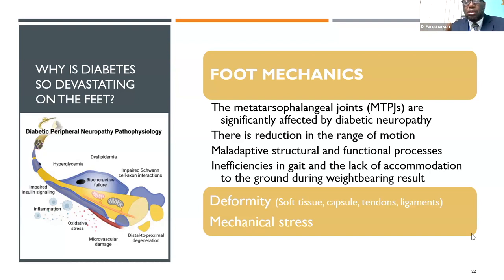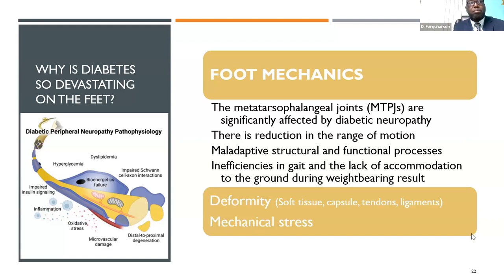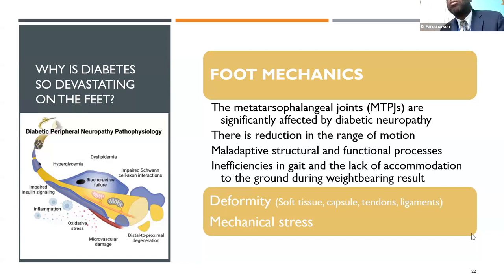Joints are significantly affected with neuropathy — there's reduction in the range of motion. When your toes are supposed to be straight, the nerves pull them into a bent position, exposing the tip of the toes to pressure. Because of neuropathy, we get maladaptive structural and functional processes that make our gait inefficient. We can't appreciate the ground beneath us, which changes the way we weight-bear. Sometimes people change their shoes, start wearing slippers, and end up walking bare feet leaving their slippers behind.